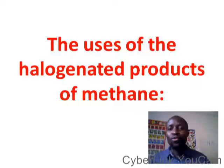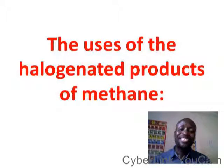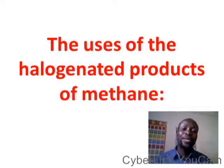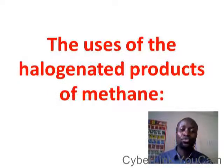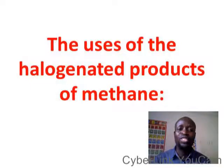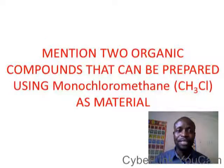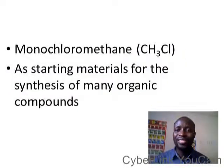Let's go straight into what we have now: what are the uses of the halogenated products of methane? This will take you to the chemical properties of alkane, and number one is the substitution reaction. Please go there and watch, then come back to the uses of the substituted product.